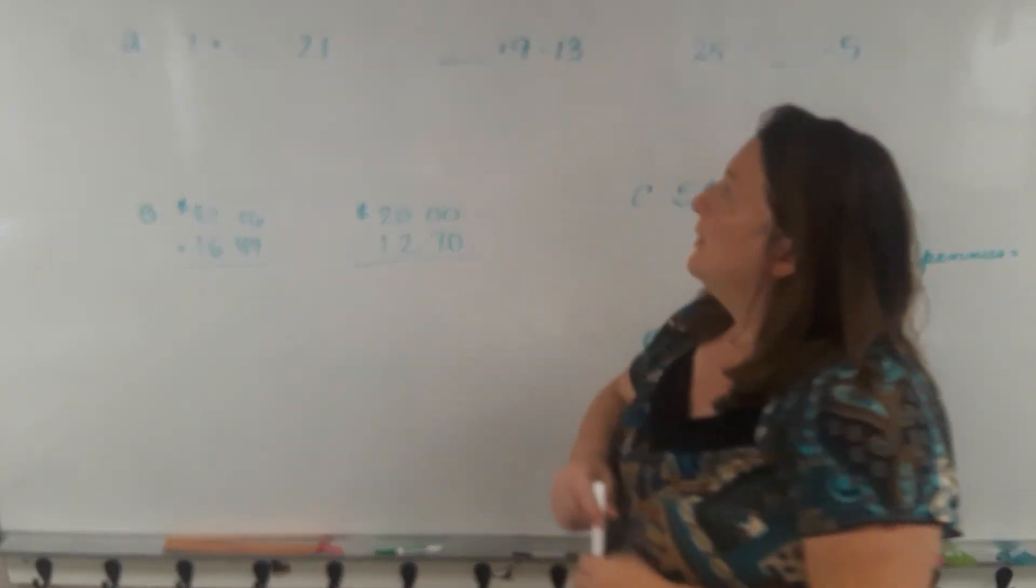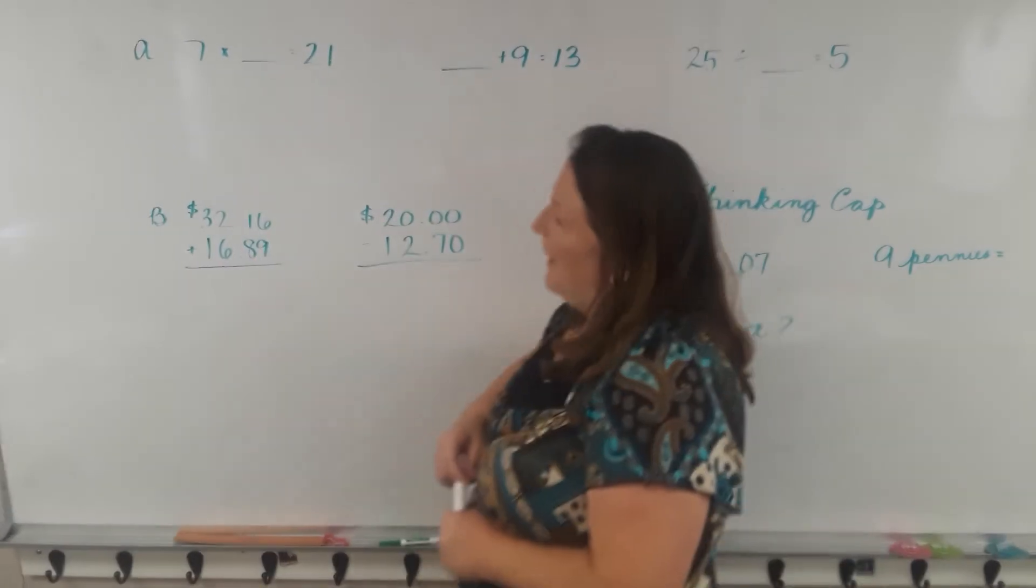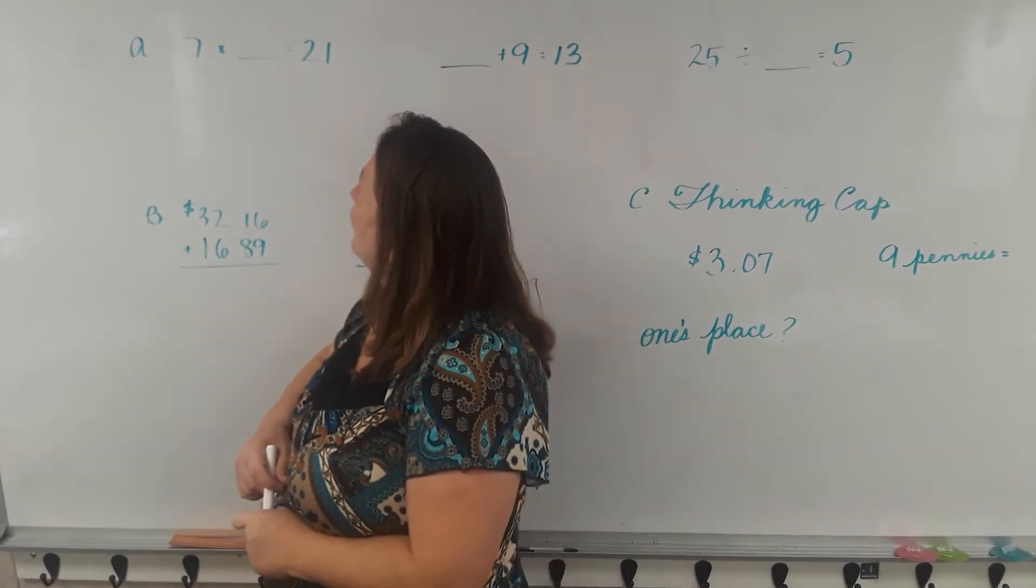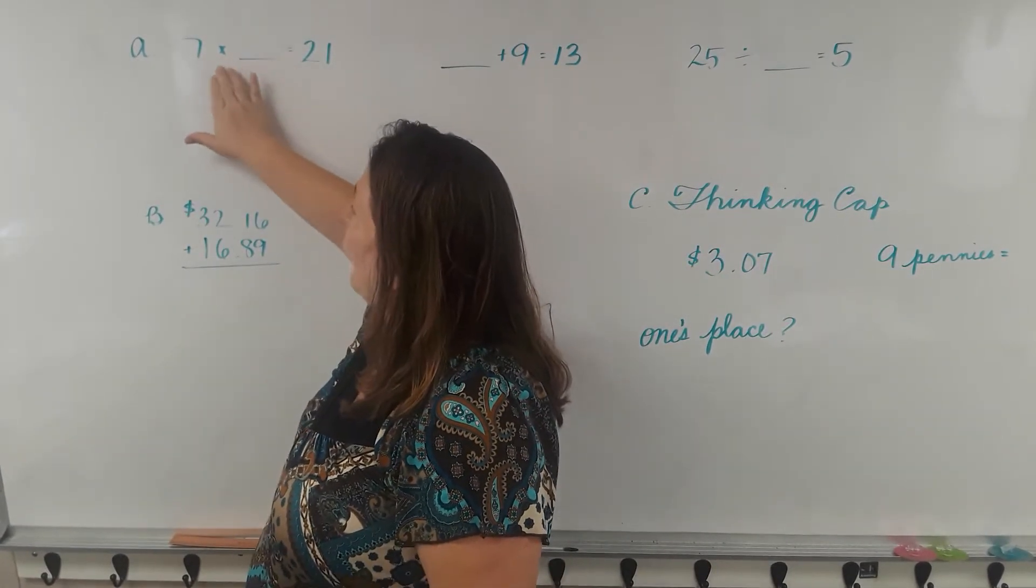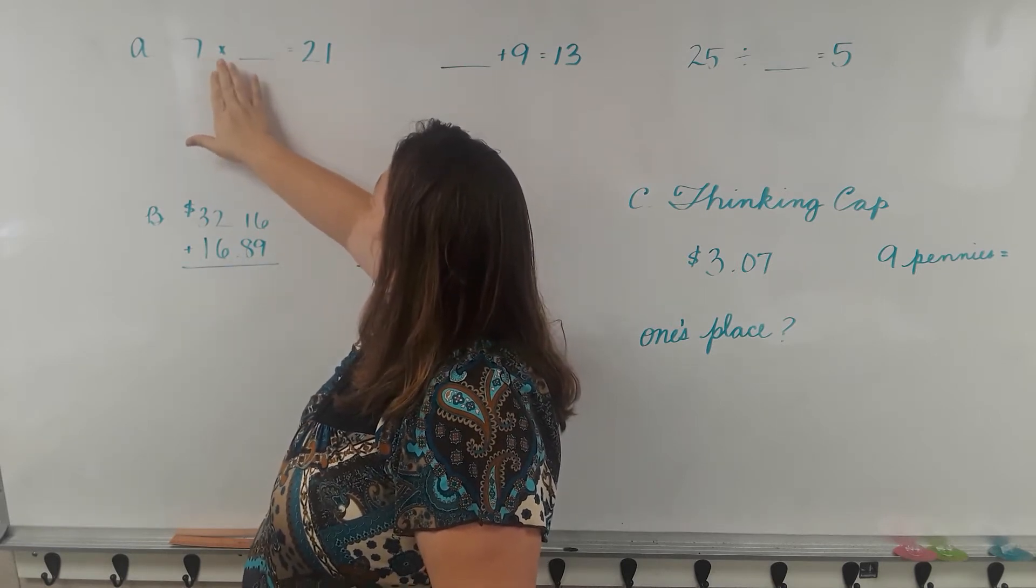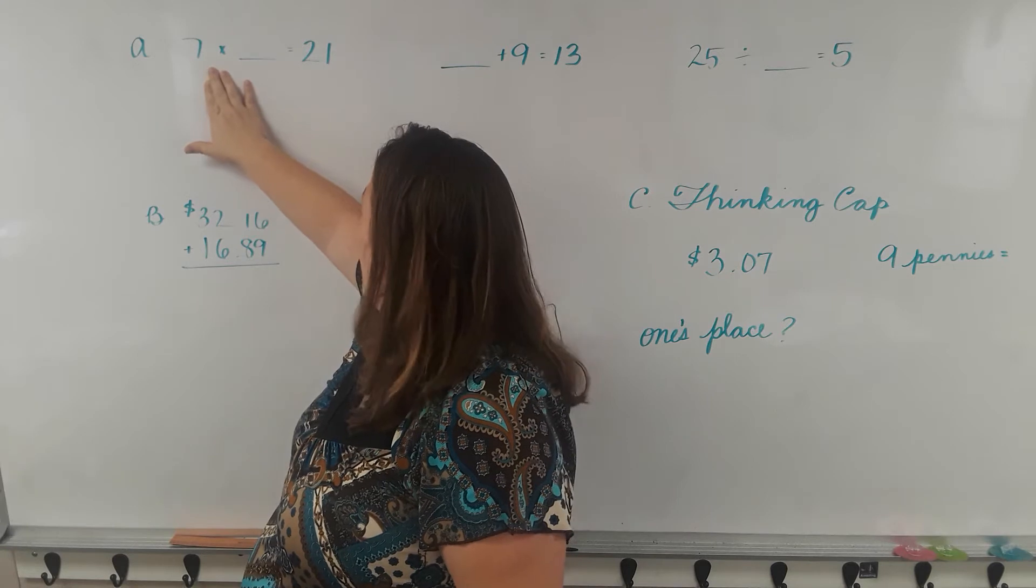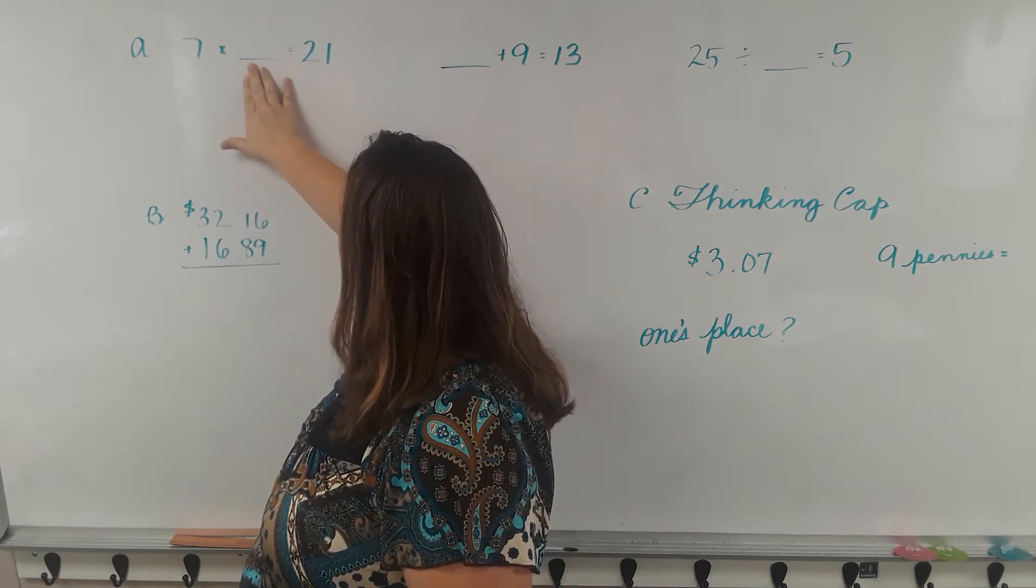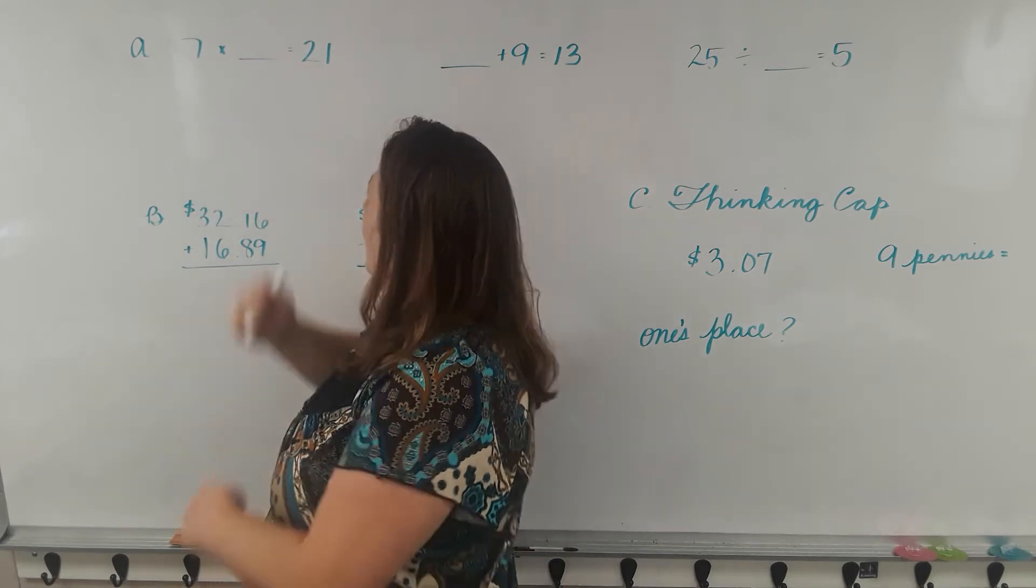We are on lesson 156 for arithmetic. Look at letter A, we have a missing number, a missing factor. So we should write our fact family to find seven times a number equals 21. So we have another multiplication, a number times 7 equals 21.